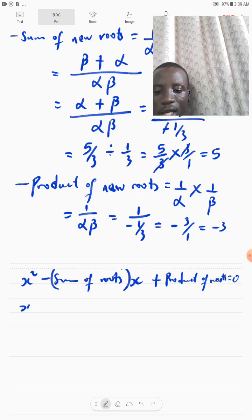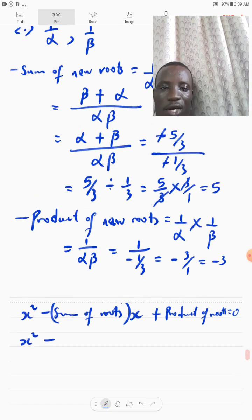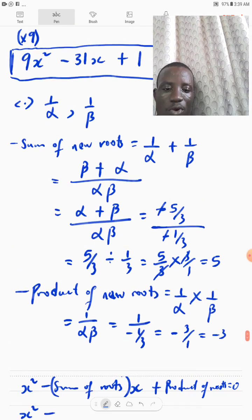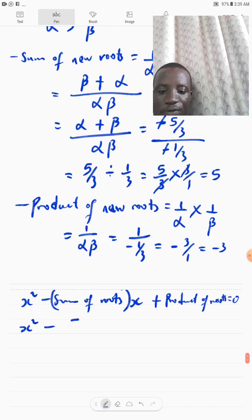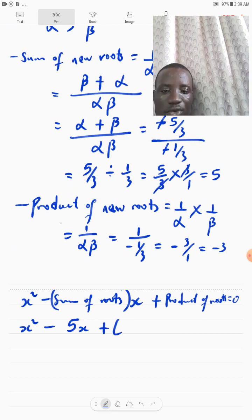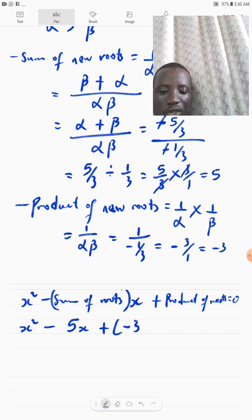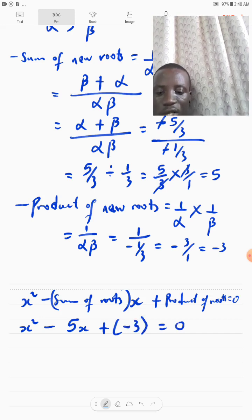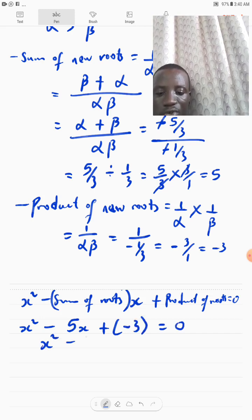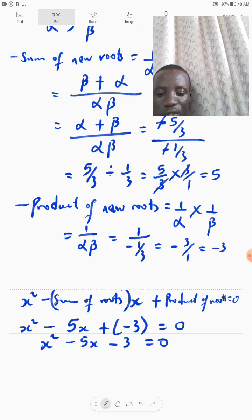So, and I can write X squared minus. What's our new sum of roots? Sum of new roots gave us 5. That will be 5X plus bracket. What is the product of our new roots? That's minus 3. So, just put minus 3 in brackets. It goes to 0. And then you open that. X squared minus 5X minus 3 equals to what? 0.